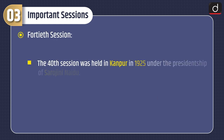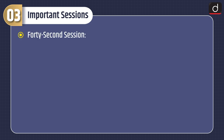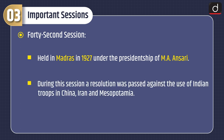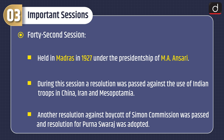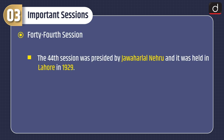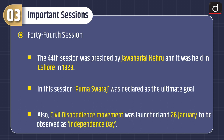Fortieth Session: The fortieth session was held in Kanpur in 1925 under the Presidentship of Sarojini Naidu. This was the first session which was presided by an Indian woman. Forty-second Session: Held in Madras in 1927 under the Presidentship of M.A. Ansari. During this session, a resolution was passed against the use of Indian troops in China, Iran and Mesopotamia. Another resolution against the boycott of Simon Commission was passed and a resolution for Purna Swaraj was adopted. Forty-fourth Session: The forty-fourth session was presided by Jawaharlal Nehru and it was held in Lahore in 1929. In this session, Purna Swaraj was declared as the ultimate goal. Also, Civil Disobedience Movement was launched on 26 January to be observed as Independence Day.